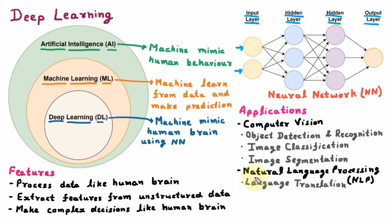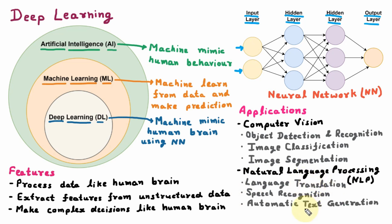The next application under Natural Language Processing is Speech Recognition, where the computer can recognize speech — what we are speaking, it can understand and even type. The next application under NLP is Automatic Text Generation, where the computer can automatically write reports and letters. The next under NLP is Sentiment Analysis, where the computer can process the language of a human and analyze its sentiments — like what is the mood, is he happy or sad? These four are the applications of Deep Learning which come under NLP.